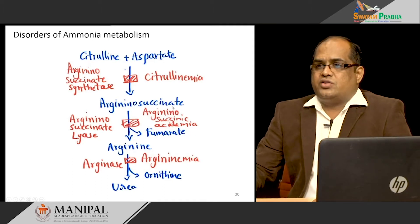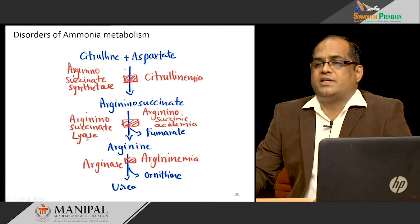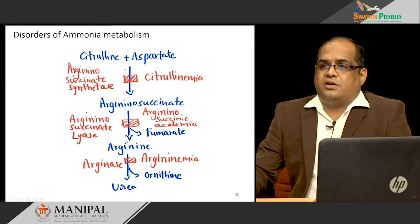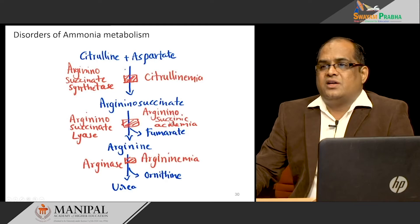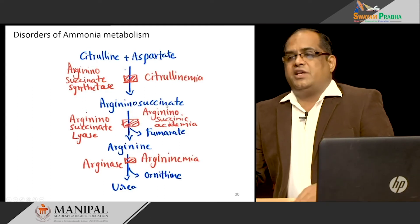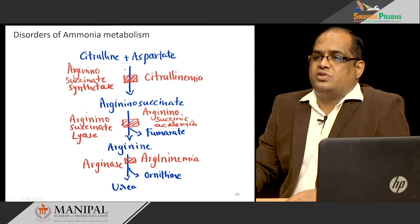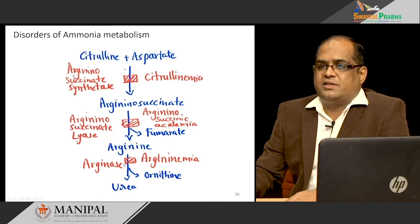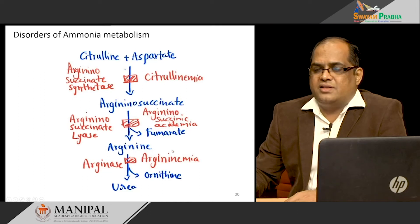The fourth disorder: arginosuccinate is converted into fumarate and arginine by the enzyme arginosuccinate lyase. Aspartate, after donating its nitrogen, is converted into fumarate, and arginine is produced. If you put a block here, arginosuccinate is not converted into arginine. This disorder — increased arginosuccinate in the blood spilling over into the urine — is called arginosuccinic aciduria. The last disorder is argininemia: arginine is acted upon by arginase to form urea and ornithine. If arginase is blocked, arginine level increases in the blood, and this is called argininemia.